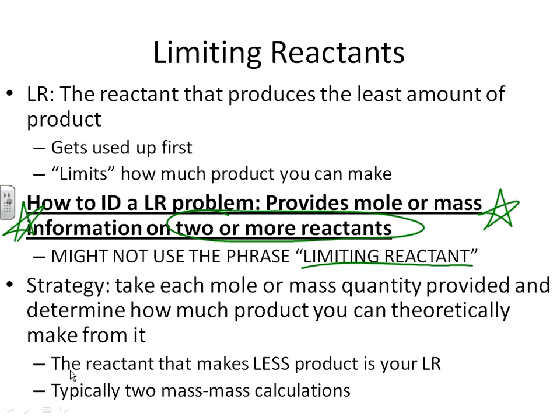It won't jump out and announce itself. Instead, it'll say: if you've got 10 grams of reactant A and 20 grams of reactant B, how much product C are you going to make? That is what a limiting reactant problem is going to sound like.